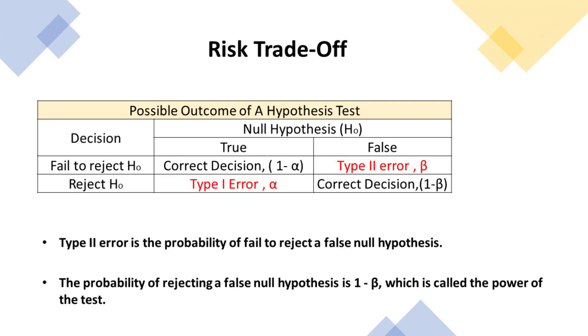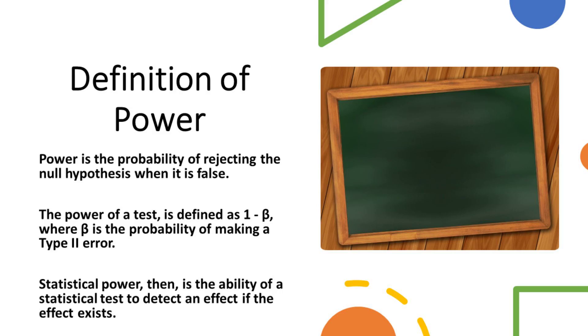Then the probability of rejecting a false null hypothesis is 1 minus beta, which is called the power of the test. In the field of statistics, power is the probability of rejecting the null hypothesis when it is actually false. It is a crucial concept in hypothesis testing and helps us understand the effectiveness of a statistical test. The power of a test is defined as 1 minus beta, where beta is the probability of making a Type II error.